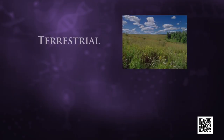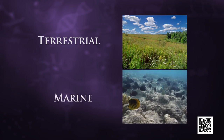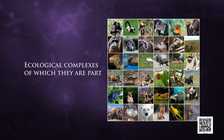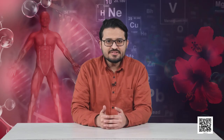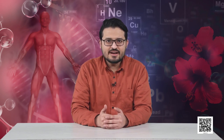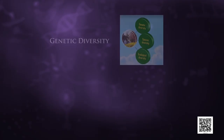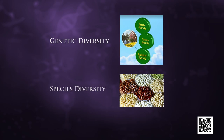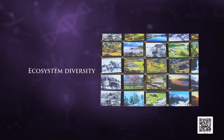Biological diversity means the variability among living organisms from all sources, including terrestrial, marine, and other aquatic ecosystems and the ecological complexes of which they are part. This includes diversity within species, between species, and of ecosystems. Biodiversity is classified into three main categories: genetic diversity, species diversity, and ecosystem diversity.